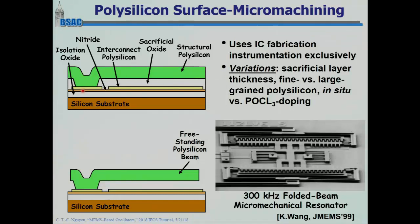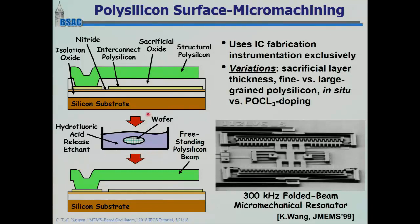You etch an anchor hole, then put down a blanket deposition of your structural layer — in this case polycrystalline silicon. You have to get your stress correct; this requires a very well-planned recipe developed over a good amount of time. You pattern it with photolithography and etching to create the mechanical structure. Finally, you dip the whole thing into hydrofluoric acid, which attacks the oxide but not the structural polysilicon or the nitride, removing the sacrificial oxide. The structure is now freestanding and free to move in any of three dimensions.